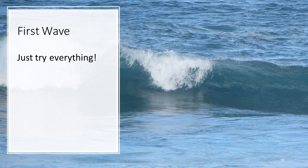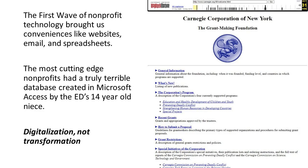I want to take us back to the first wave of technology — what I like to call Just Try Everything. This is the 1990s, the birth of the Internet, the elimination of the fax machine, getting into email and websites. There's a screenshot here of Carnegie Corporation of New York — the oldest charity in the U.S. — and their website in 1996. What we were really doing was just regurgitating the stuff we did on paper and on phone and sticking it into digital medium. Digitization, not transformation.